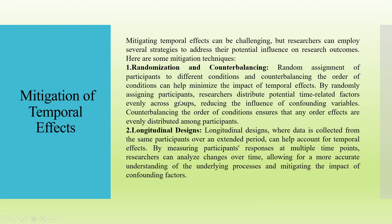Mitigation of temporal effects can be done through randomization and counterbalancing. Random assignment of participants to different conditions and counterbalancing the order of conditions can help minimize the impact of temporal effects. By randomly assigning participants, researchers distribute potential time-related factors evenly across groups, reducing the influence of confounding variables. Counterbalancing the order of conditions ensures that any order effects are evenly distributed among all participants.